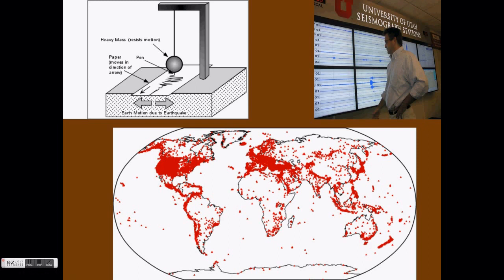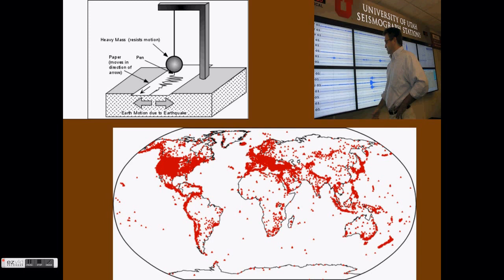All across the world, scientists have set up stations which can detect these seismic waves as they move through the Earth. Instruments called seismographs, which you can see at the top left, detect these waves. The map you see here shows recorded locations of earthquakes across the globe.